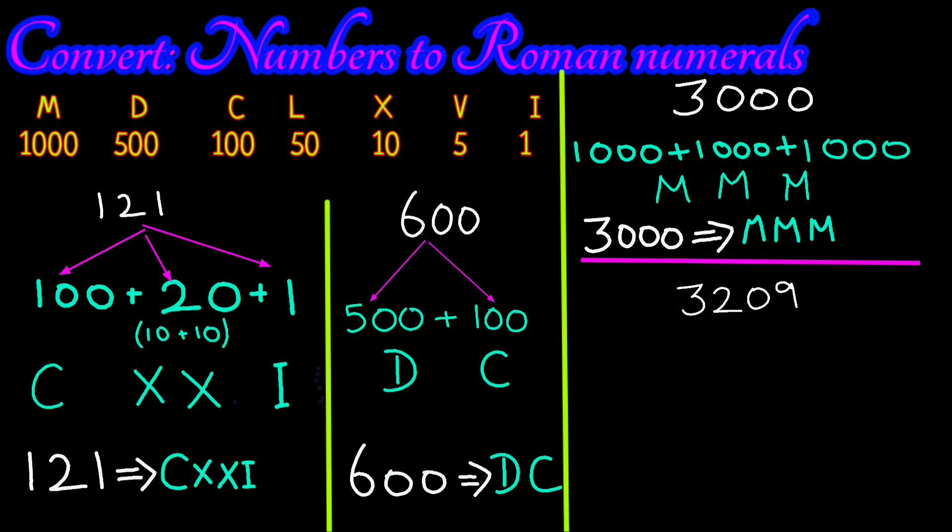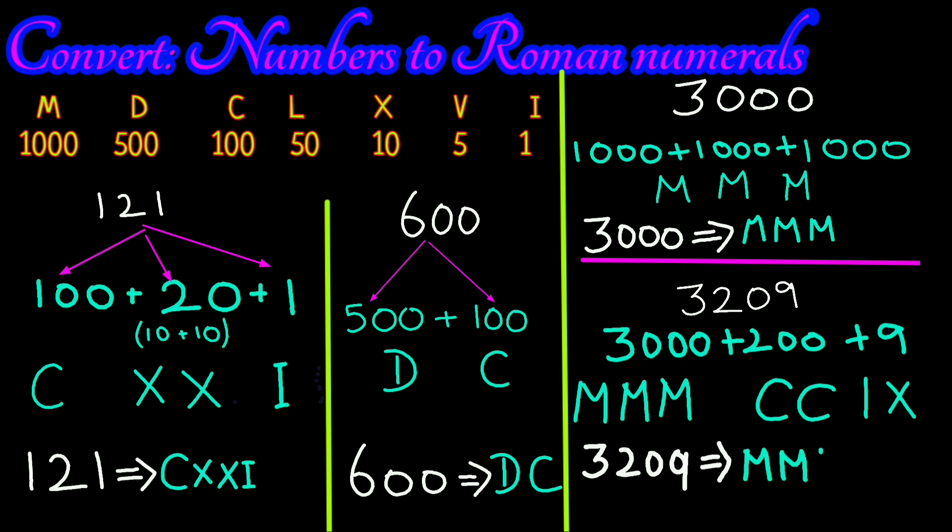Let's split this one as 3000 plus 200 plus 9. 3000 is represented by MMM. 200 as CC, 9 as IX. For 3209, the Roman numeral is MMMCCIX.